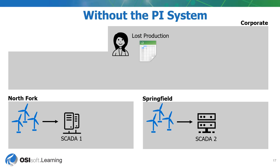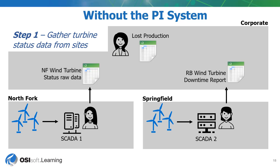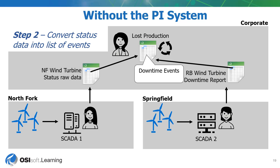Here's how we can build out a report without using the PI System. I have two sites in my wind farm company — North Fork and Springfield — and each of them have slightly different SCADA systems. In order to calculate my lost production, I'll first need to talk to contacts at each of these sites. I'll gather the turbine status data, and I now have the raw data but in slightly different formats. I'll convert the status data into a list of events to calculate my lost production.